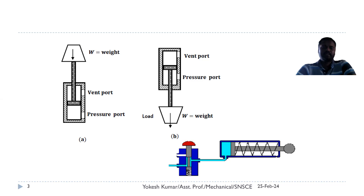In case B, this is an inverted cylinder where retraction can be accomplished with the help of fluid pressure, and extension can be accomplished with the help of gravity force.